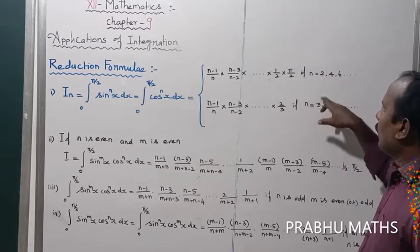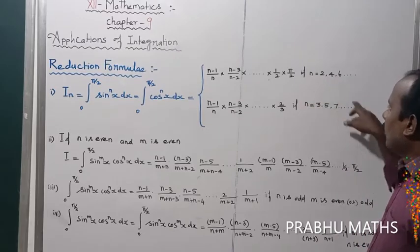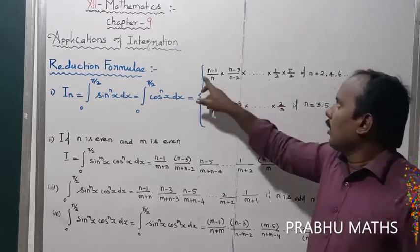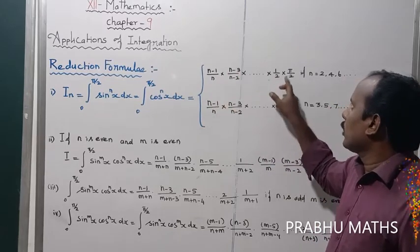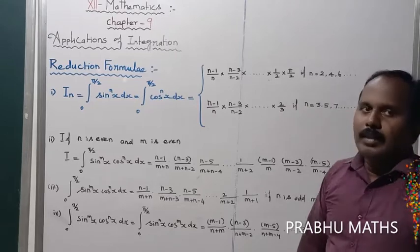For even number, the formula is (n-1)/n times (n-3)/(n-2) and so on, until 1/2 times π/2. If n is equal to an even number.